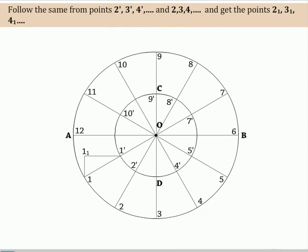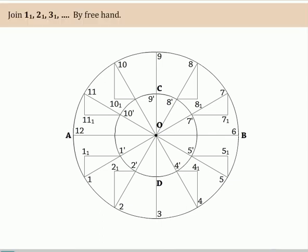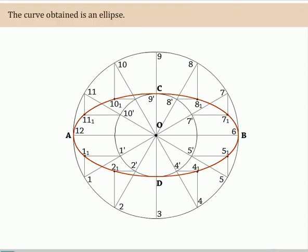Follow the same from points 2, 3, 4, etc. and 2', 3', 4', etc. and get the points. Now join the points by freehand. The curve obtained is an ellipse.